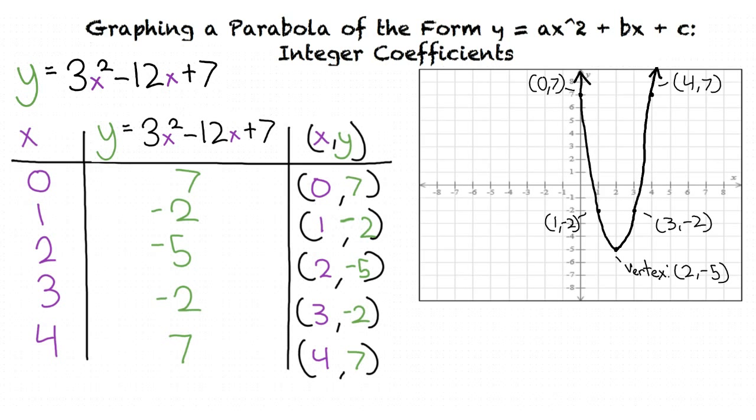I think I'm starting to get this. In order to graph our parabola of the form y equals ax² plus bx plus c, we first use one of our two methods to find the vertex of the parabola. After that, we find and plot our points, and then we draw our graph. Now you're getting the hang of it.